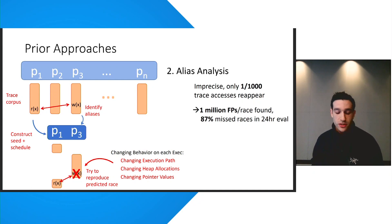So we evaluated this and found that only one in a thousand memory accesses will reappear when a system call is executed again. And this leads to approximately a million false positives that need to be tested for every true positive prediction that identifies a race. So compared to concurrency fuzzing, alias analysis has the advantage that it considers all possible races for a set of traces. But it also has the disadvantage that is very imprecise because it makes the simplifying assumption that a memory access that appears once in a trace is always going to be performed again when that particular system call executes.